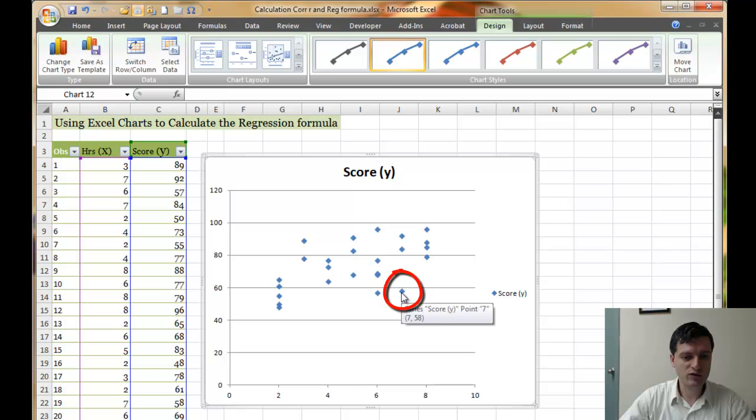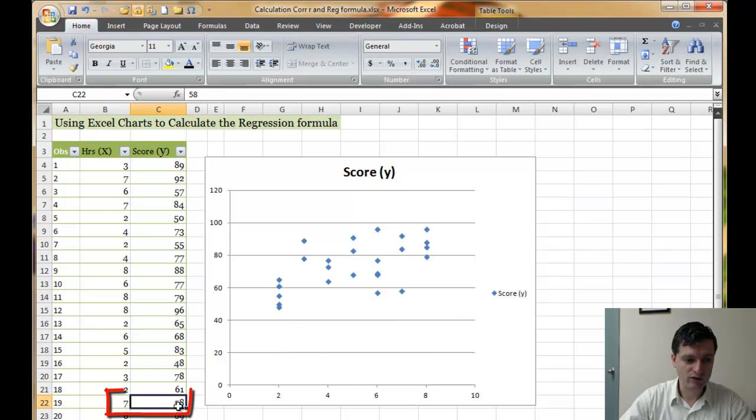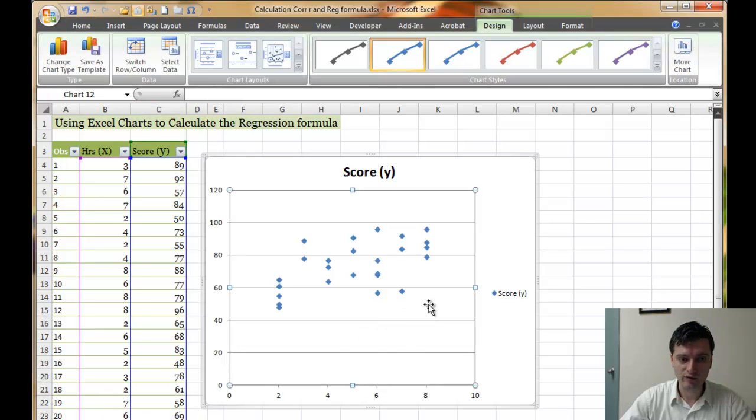For example, this data point right here is a point of 7 hours studied and 58 score. So that would be somewhere right over here. 7 hours studied and 58 is the score. So that's the data point for this particular pair of values.